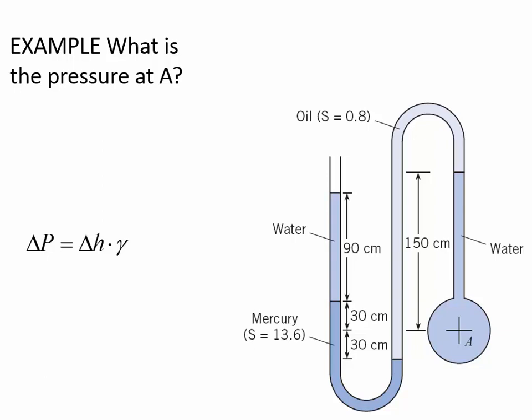I'm going to bring the lights up and give you some time. The unit weight of mercury is 13.6 times 9810 newtons per meter cubed. The unit weight of the oil is 0.8 times 9810 newtons per meter cubed. When you go down, the pressure increases; when you go up, the pressure decreases. Work from the known towards the unknown.